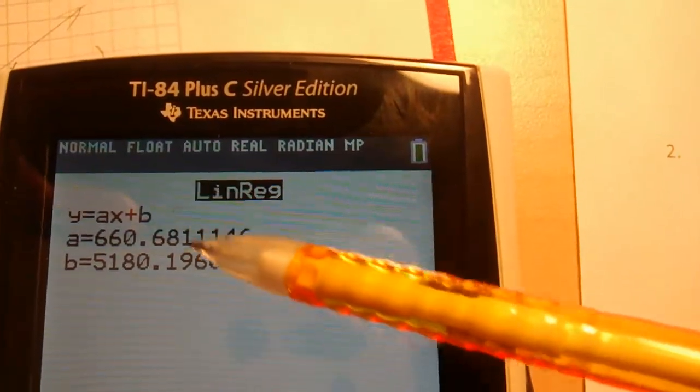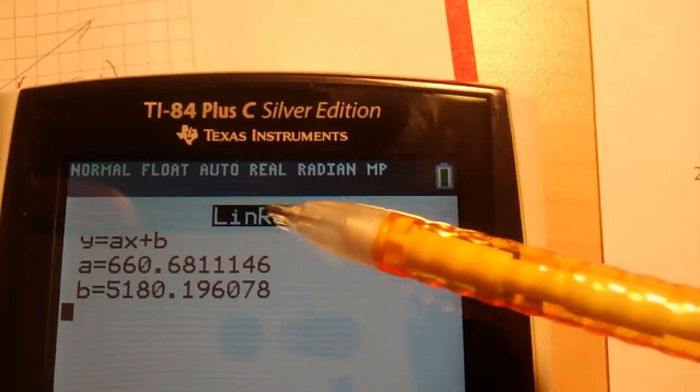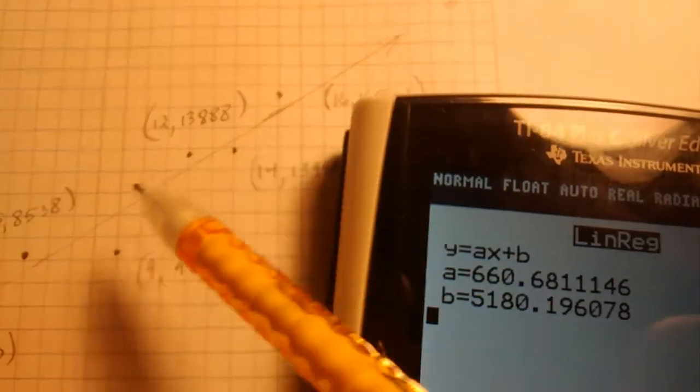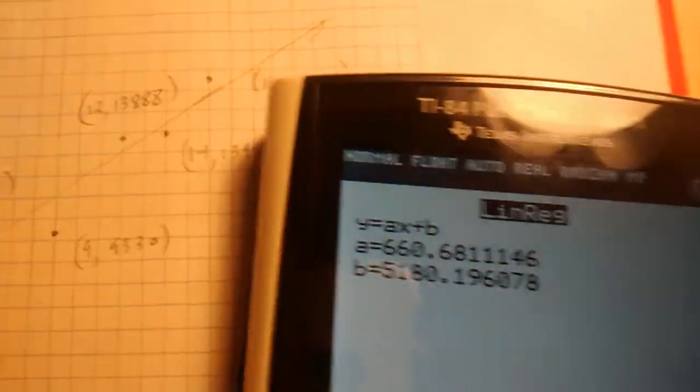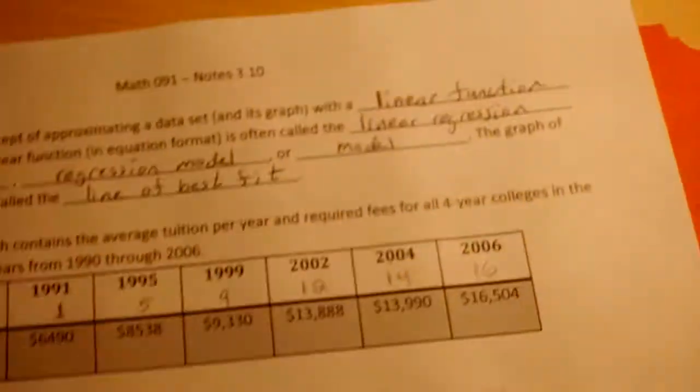Our calculator gave us this when we went through the steps to finding the linear regression symbolic rule that represents that line. And before we talk about this, let me fill in the blanks for you on the top of your sheet here.